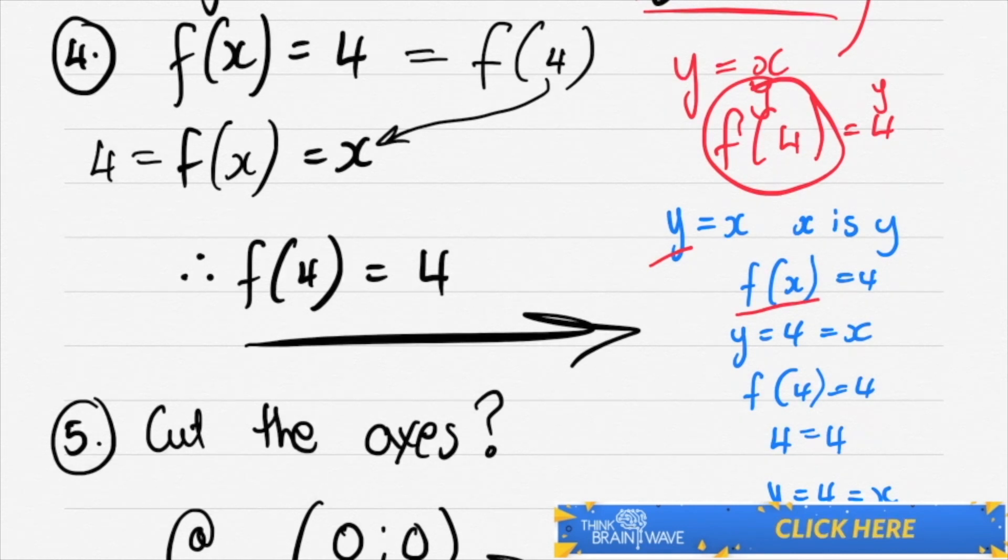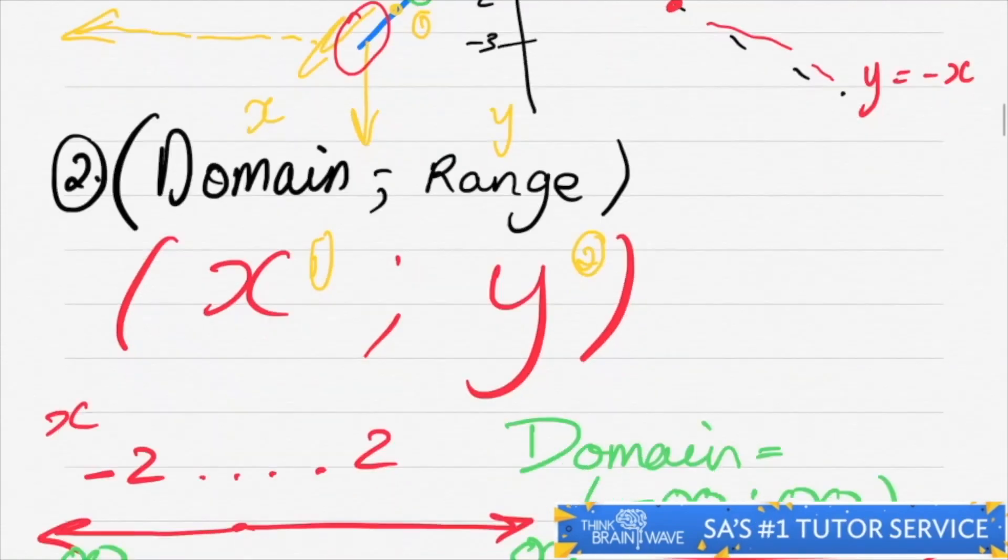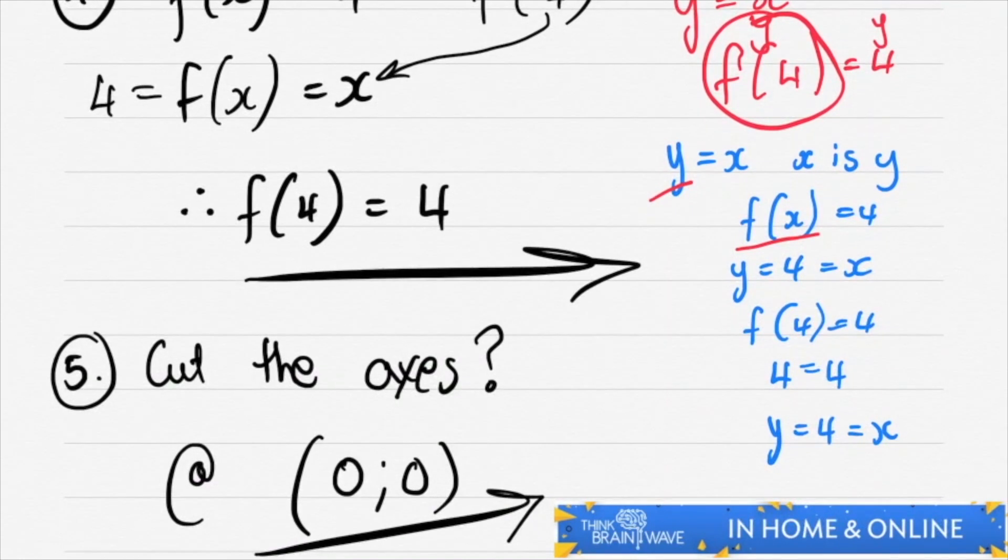Now let's calculate where this equation cuts the axes. We can look up and we can see that this function cuts it right over there, which is 0x, 0y. So we put that down there. There's a nice easy answer.